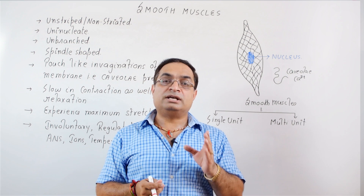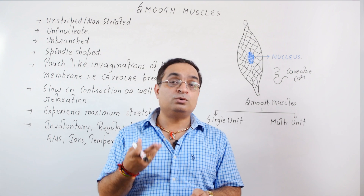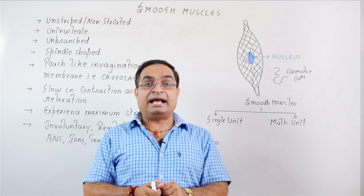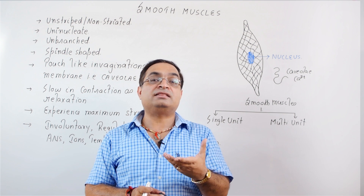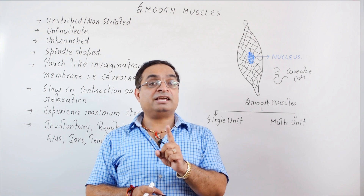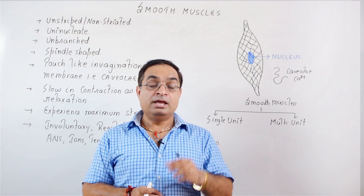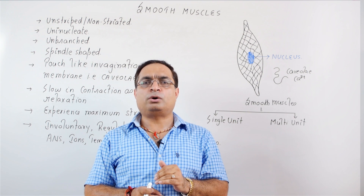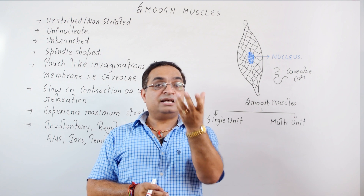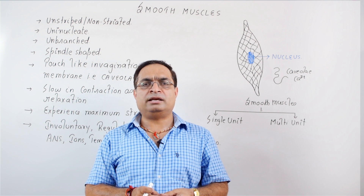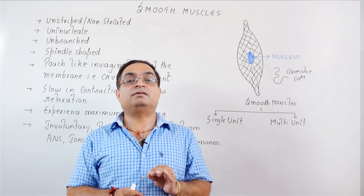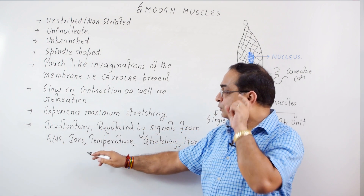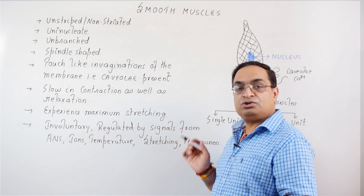For example, in most mammals, testes are located outside the main body cavity in a pouch-like structure called the scrotum. The wall of the scrotum has dartos muscles, and the spermatic cord has cremester muscles. These smooth muscles contract and relax in response to temperature — if temperature is high, muscles relax and testes move away from the abdominal area; if temperature is low, muscles contract and testes are pulled up toward the abdomen for warmth. So smooth muscle fibers are involuntary and respond to signals from the autonomic nervous system, ions, temperature, stretching, and hormones.